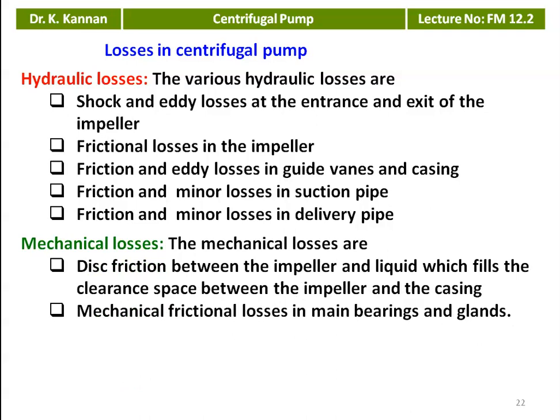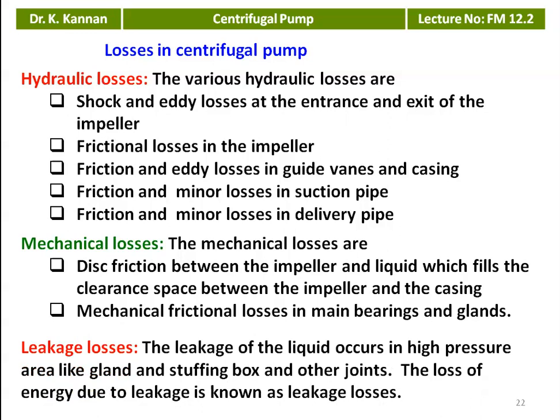The second type of losses are mechanical losses. These include disc friction between the impeller and the liquid which fills the clearance space between the impeller and the casing, and mechanical frictional losses in the main bearing and the gland. At the end of the shaft, we have the main bearing, general bearing, and a gland stuffing box. There are also leakage losses — loss of energy due to leakage at high pressure areas like the gland, stuffing box, and other joints.